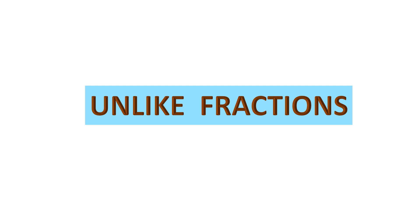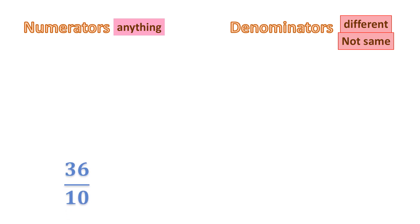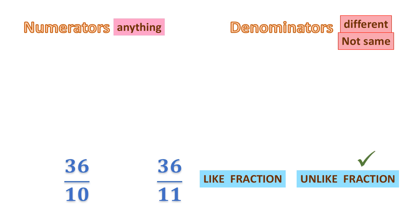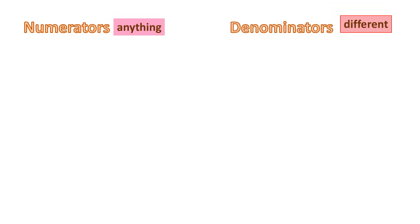Now let us talk about unlike fractions. If fractions are not like fractions, then they are unlike fractions. In unlike fractions, the numerators can be anything, but the denominators must be different — they cannot be the same. Numerators can be anything, but the denominator should be different in an unlike fraction.